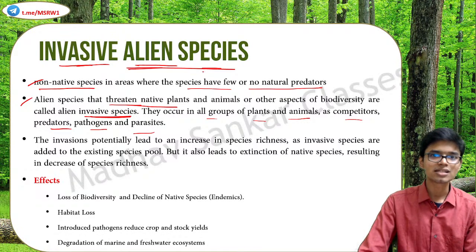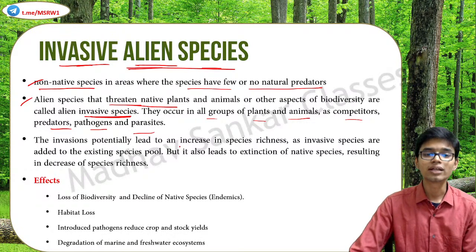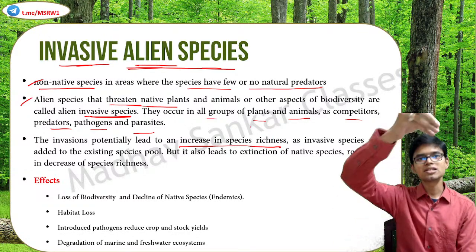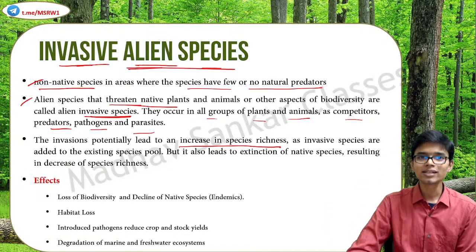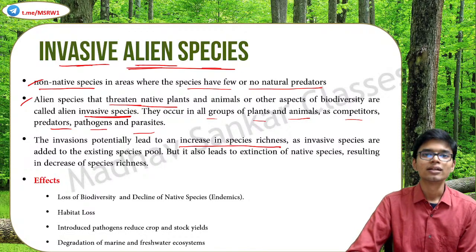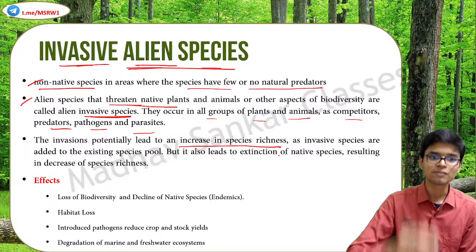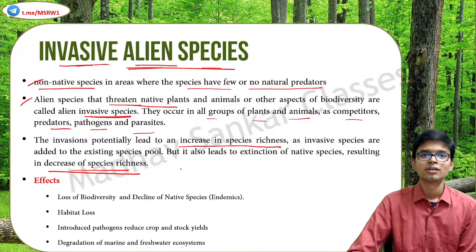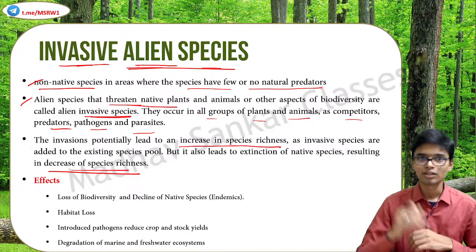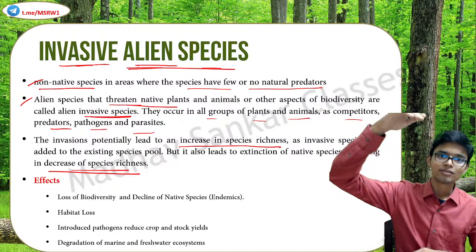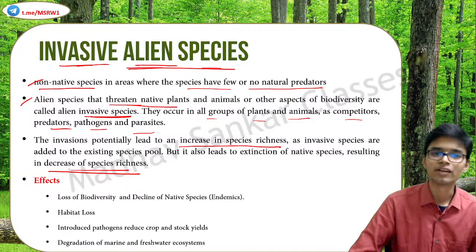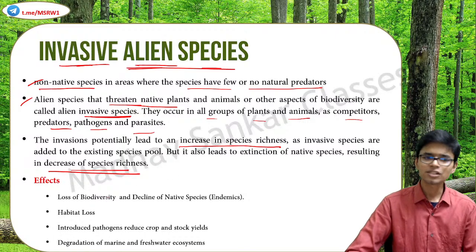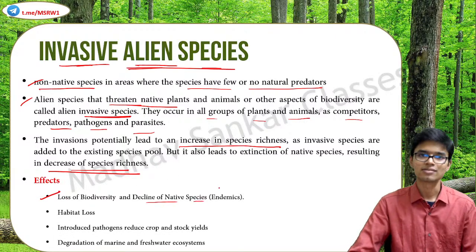These species are known as alien species. If these alien species threaten the native species, then they are known as invasive species. They occur in all groups of plants and animals as competitors, predators, pathogens, or parasites. Initially when these species arrive into a region they tend to increase the species richness since a new species is being added. But once they start to multiply at very high rates, they destroy the inherent or native ecosystem and then we see a reduction in species richness.